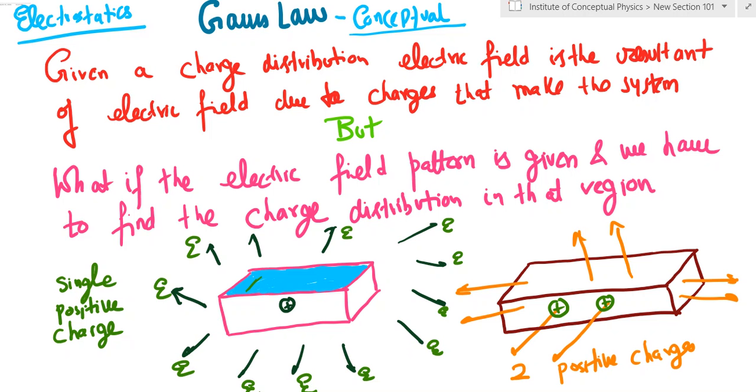But in the case of Gauss, this is not the way of looking at things. The way of looking at things in Gauss law is reverse. In Gauss law, this is the way we look at it: we know what is the electric field pattern in the surrounding area of the charge.